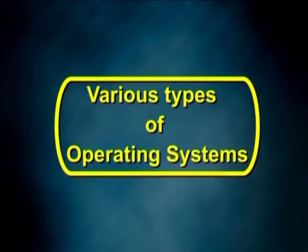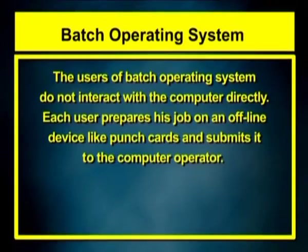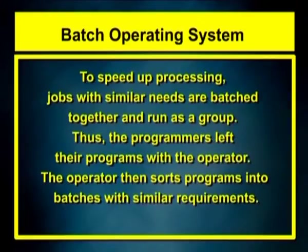Now, let us discuss various types of operating systems. Operating systems have been there from the very first computer generation and keep evolving over time. Number 1 – Batch Operating System. The users of a Batch Operating System do not interact with the computer directly. Each user prepares his job on an offline device like punch cards and submits it to the computer operator. To speed up processing, jobs with similar needs are batched together and run as a group. Thus, the programmers leave their programs with the operator, who then sorts programs into batches with similar requirements.